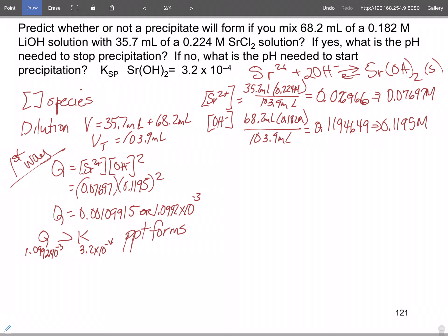So the next question is, if yes, what does the pH need to stop precipitation? So we need to know when precipitation stops. Precipitation stops based upon the hydroxide ion concentration. So we know that precipitation stops when Q is less than Ksp.